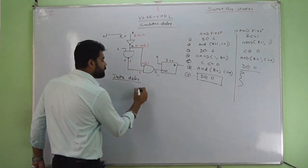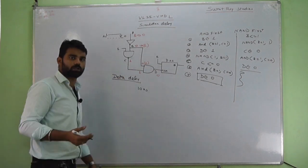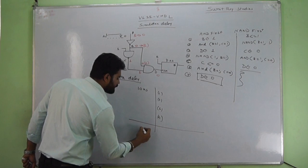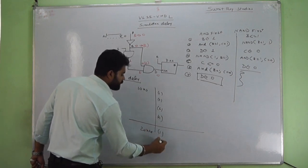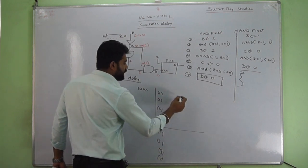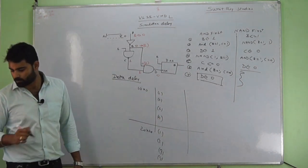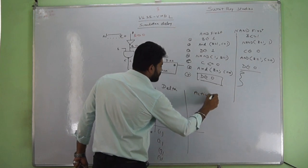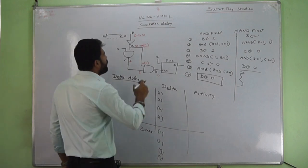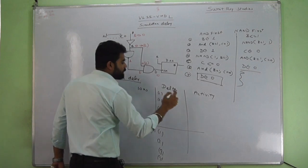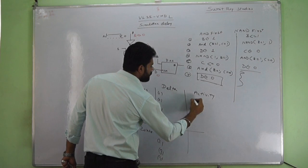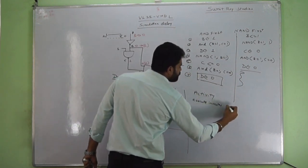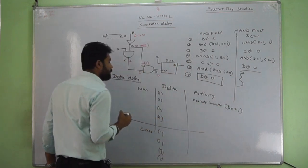We divide our time, and then the next nanosecond, for example the 20th nanosecond, will start. Again it will be divided into deltas. In the first delta, the basic element, the inverter, is calculated and executed, so B becomes 1.